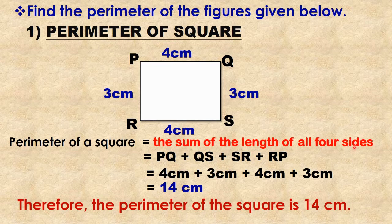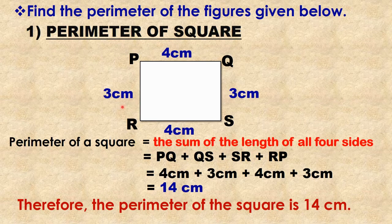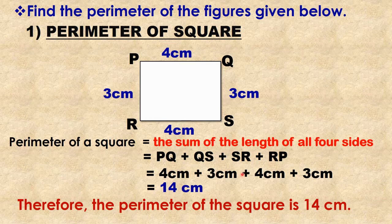For example, find the perimeter of a figure having side PQ = 4 cm, side QS = 3 cm, side SR = 4 cm, and side RP = 3 cm. Perimeter is equal to PQ + QS + SR + RP = 4 cm + 3 cm + 4 cm + 3 cm = 14 cm. Therefore, the perimeter is 14 cm.